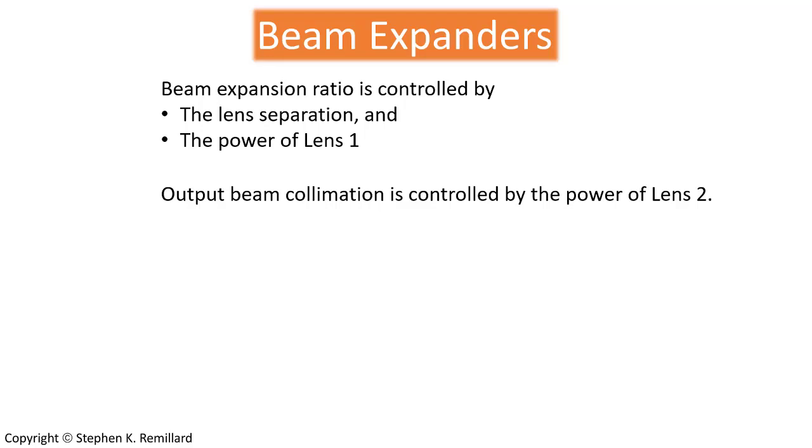The collimation is controlled by the power of the second lens group. Make it stronger, the rays will converge. Make it weaker, the rays will diverge. There is an ideal power for that second lens group, but you can't change that on the fly. So with a collimating lens in between that can be slid back and forth, you can keep the output beam from diverging.